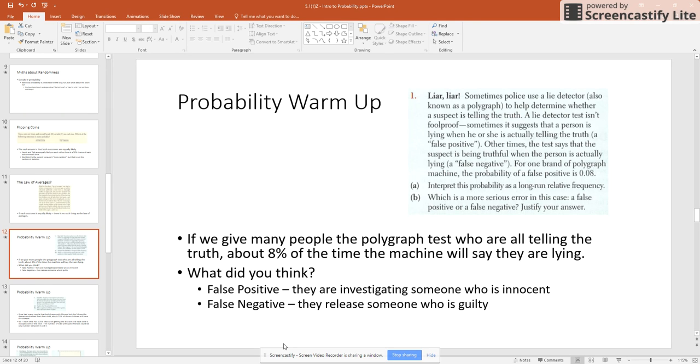So in context here, my 0.08 means that 8% of the time the machine will say that someone is lying when they are really telling the truth. A false negative. So which is a more serious error in this case, part B, a false positive or false negative.